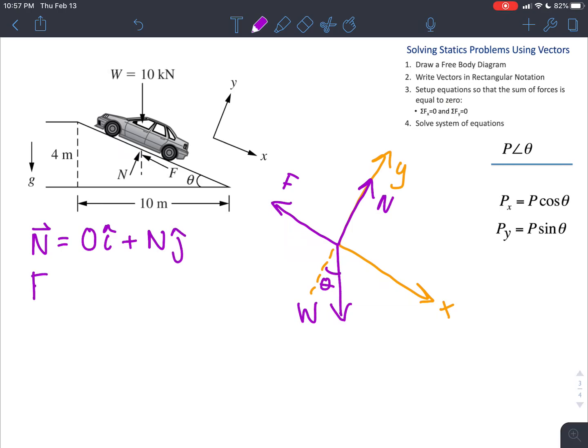For our friction force, we have that is completely in the negative x direction. So we have a negative F i hat plus zero j hat.